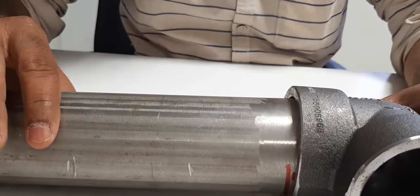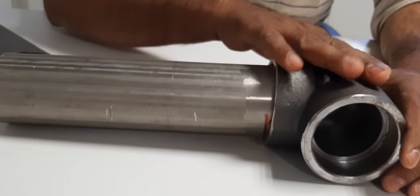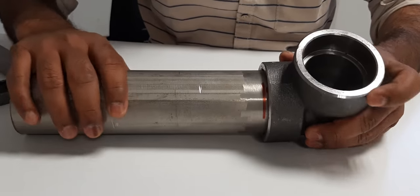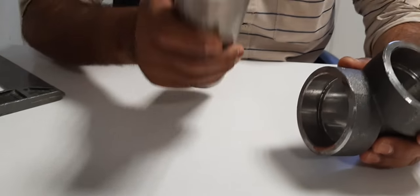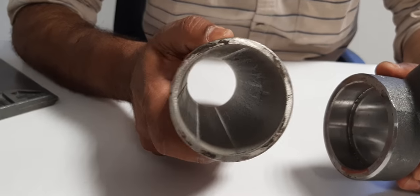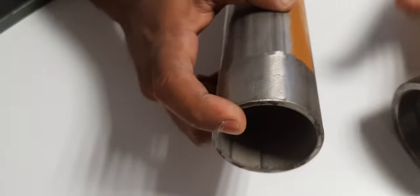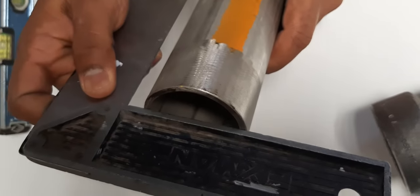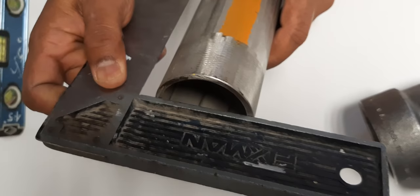This is a 2-inch pipe and this is a socket elbow on the pipe. See, the pipe edge is leveled. You can check with the scale also, triangle scale.